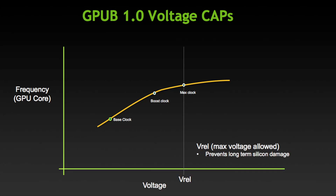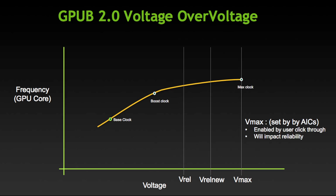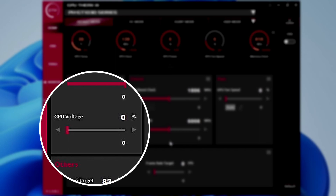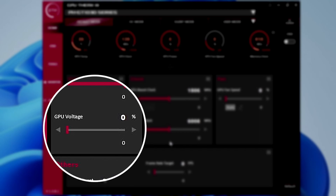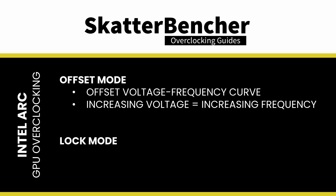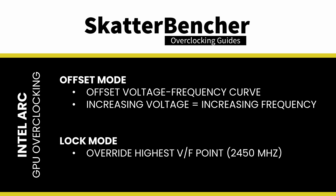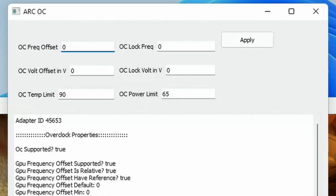On Nvidia graphics cards, the reliability voltage (V-REL) defines the maximum warranted voltage. The maximum voltage (V-Max) is the highest voltage that AIB partners can enable on their products. A percentage slider enables the range beyond V-REL up to V-Max. Similarly, on the A380, increasing the offset moves you up along the factory fused voltage frequency curve, giving you access to VF points with higher voltage and frequency. In lock mode, you can override the highest available VF point within the warranted range — in this case, 2450 megahertz — with a manual voltage and frequency.